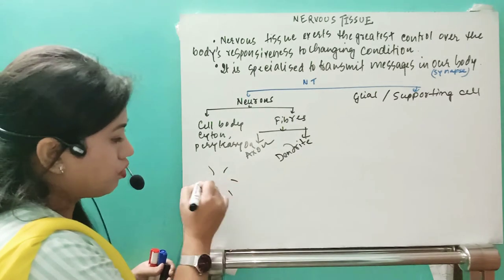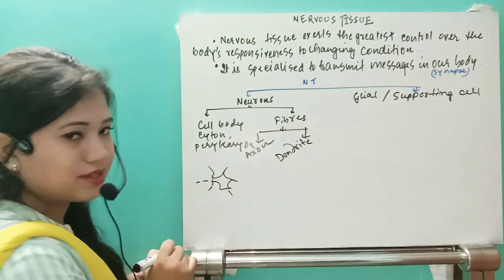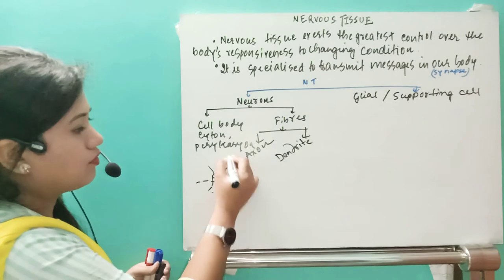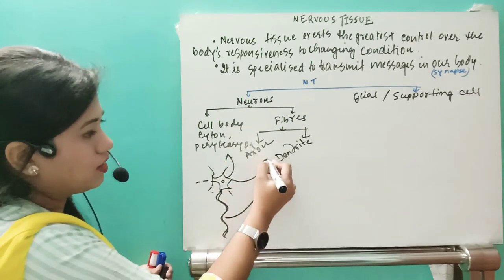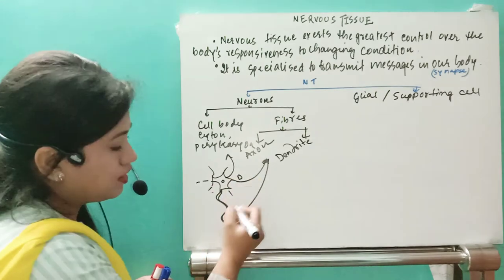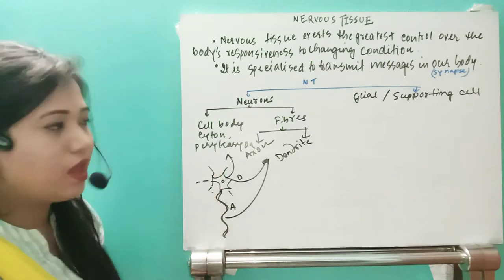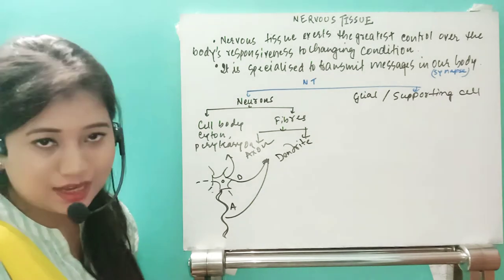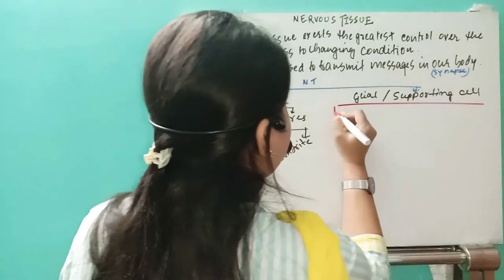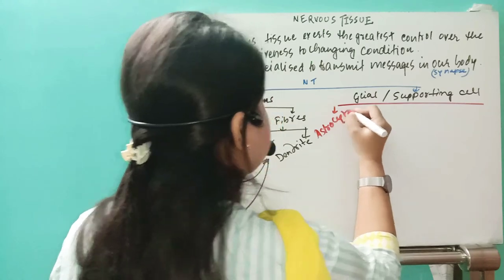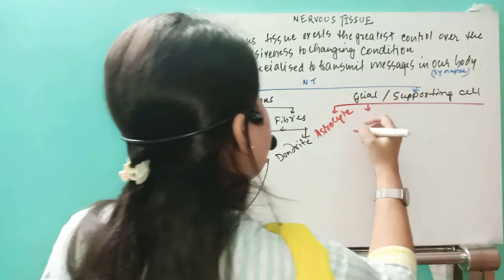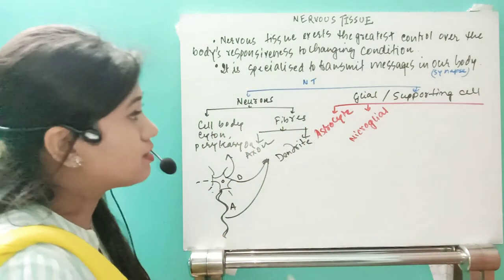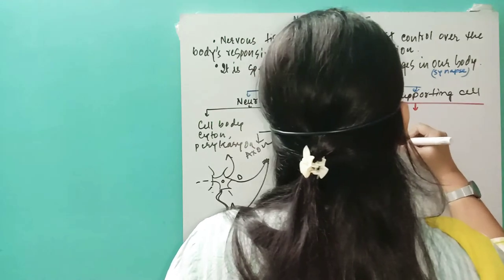This is the neuron: this part is the cytone, these are dendrites, and this is the axon. The nucleus is in the cytone. Now to support the nervous system, we also have glial cells. These are: astrocyte, which is the largest glial cell; microglial cell, which is the smallest type of glial cell; oligodendrite; and the last type is the ependymal cell.